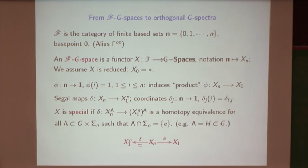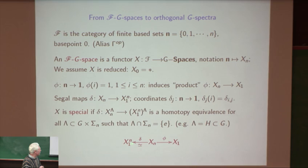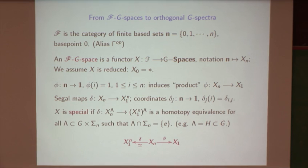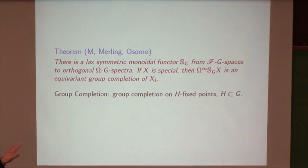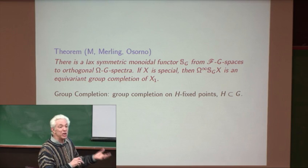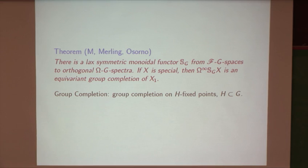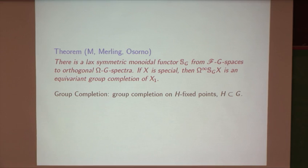An FG-space is nothing but a functor to G-spaces, and everything's going to be reduced, so there's no problem about based versus unbased spaces. The idea of the Segal machine—Bert told you what specialness is—is that this is the right notion of equivalence: think of the motivation as a product up to homotopy on G-spaces with all higher homotopies built in from the structure of the functor from F into G-spaces. The modification of the Segal-Shimakawa machine gives you the property that this functor from G-spaces to G-spectra is lax symmetric monoidal and has good homotopical properties. It is a group completion, which means you have a group completion of H-fixed points for all subgroups H.